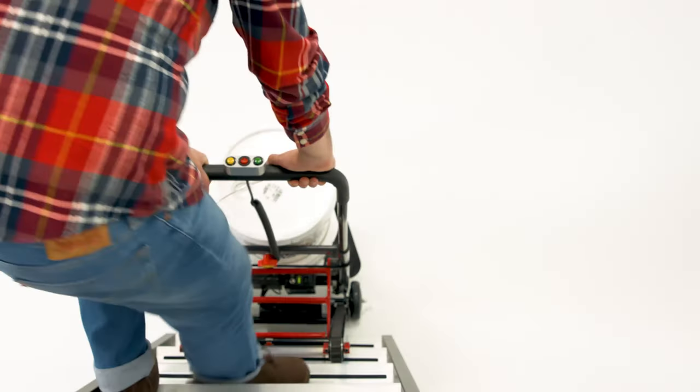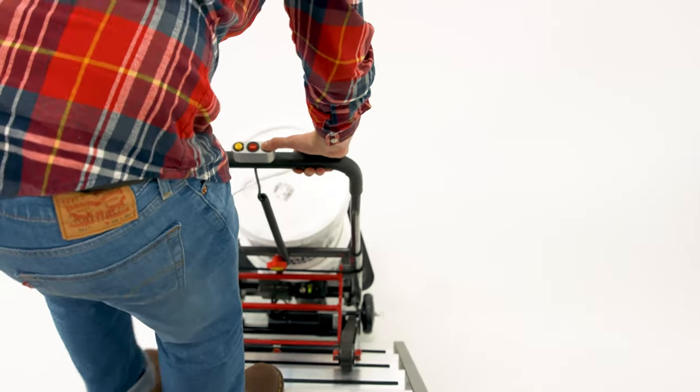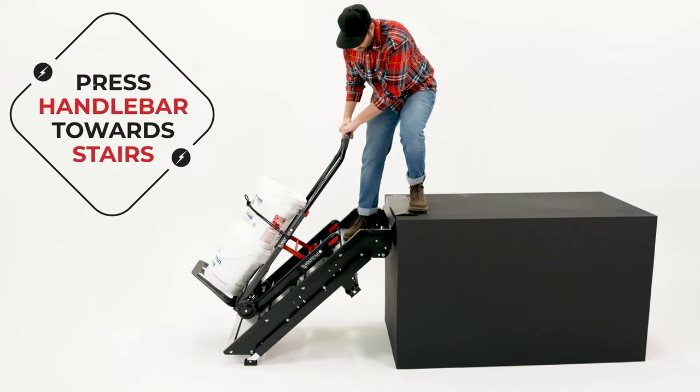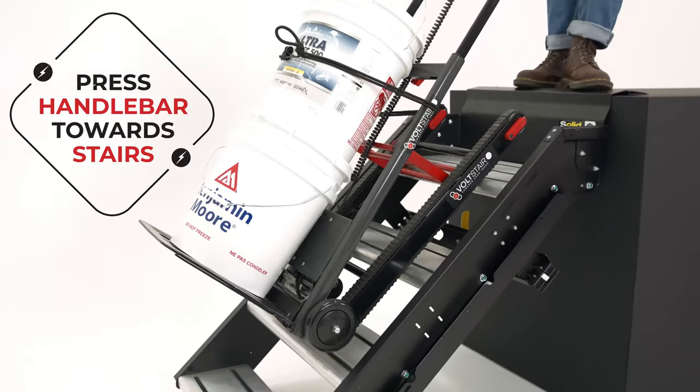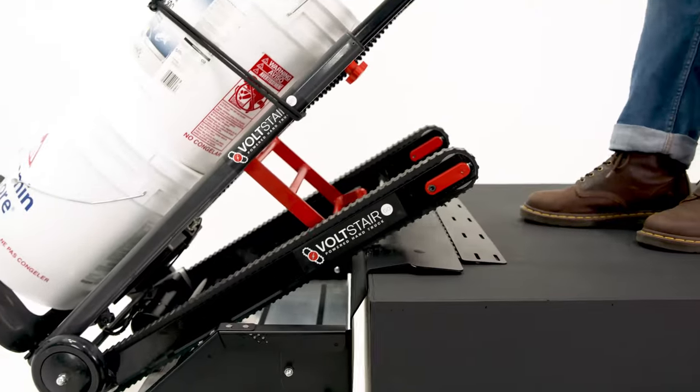Press the tracks flat on the stairs and press the green button to begin your climb. Press the handlebar towards the stairs, maintaining constant pressure between the tracks and the stairs, and hold the green button until you reach the top.